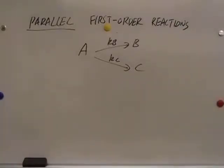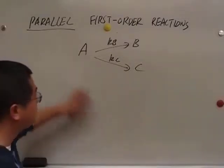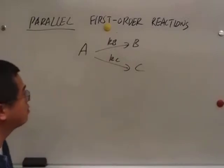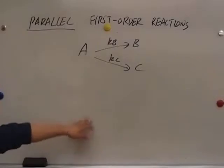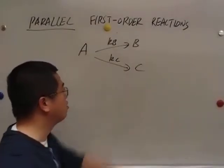I will derive the rate law for the parallel first-order reactions. In this reaction mechanism, there are two elementary steps. Both are first-order reactions. The reactant A may be converted to B, it may be converted to C.